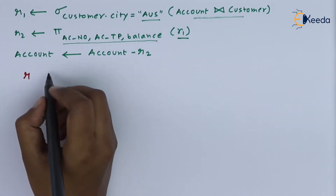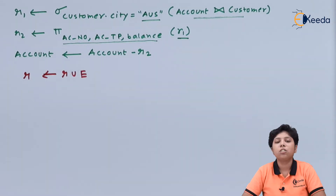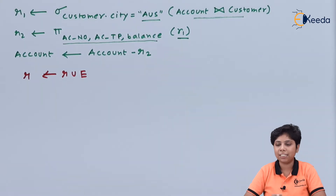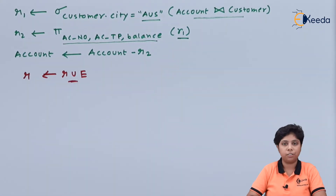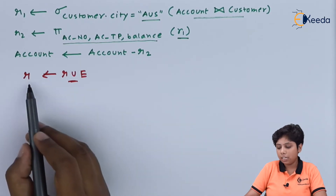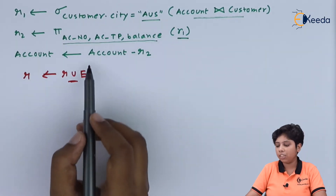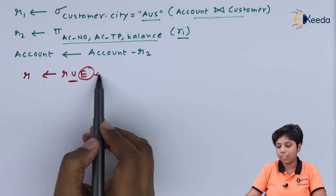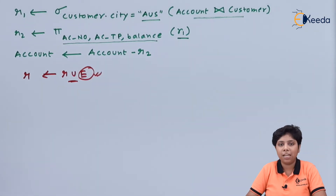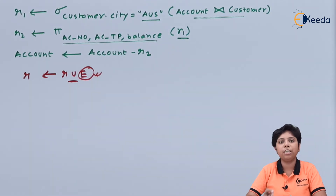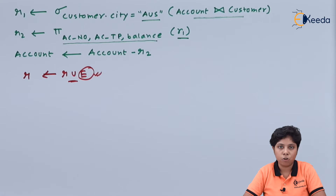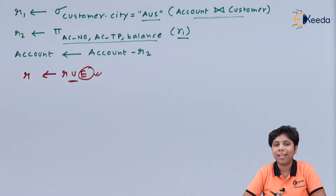Just like the deletion operation, the insertion operation is represented by the union operator. A single relation is united with the new attribute, new tuple, or new value — denoted by e — and we get a new relation with the additional record. We will now perform some additions on our existing relations: account, customer, and depositor.